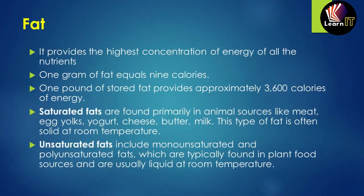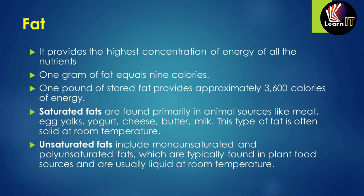Fat has the highest concentration of energy of all the nutrients — single-handedly more than carbohydrates and proteins combined. One gram of fat equals nine calories, so one pound of fat gives approximately 3,600 calories of energy, which is a huge amount compared to carbohydrates and proteins.